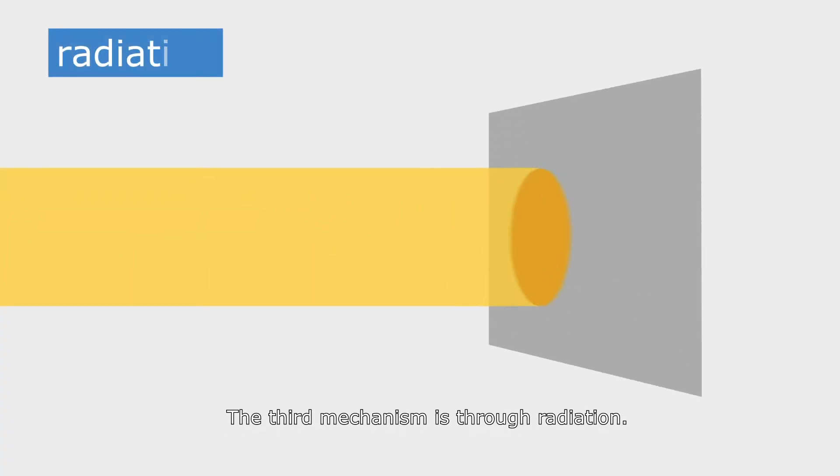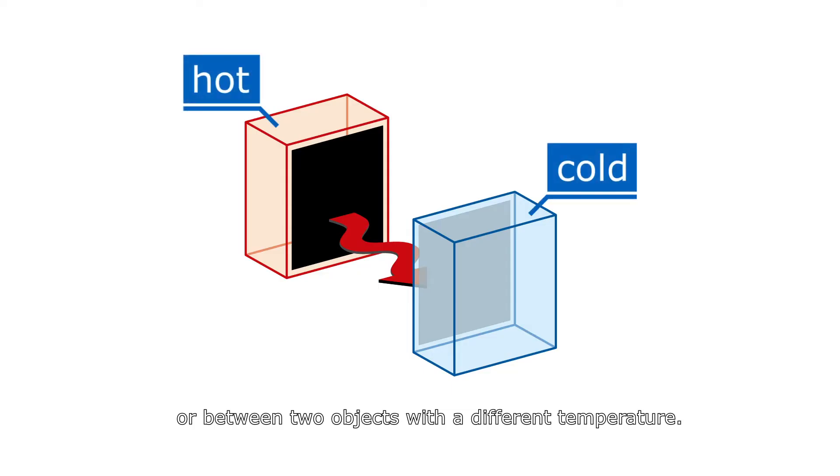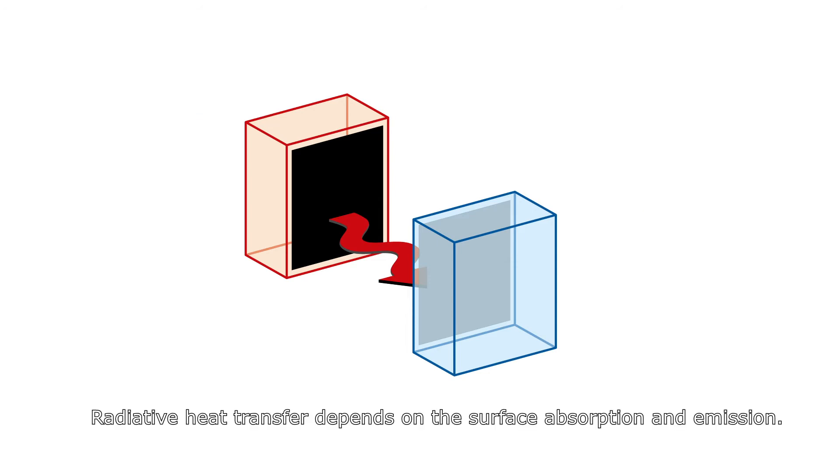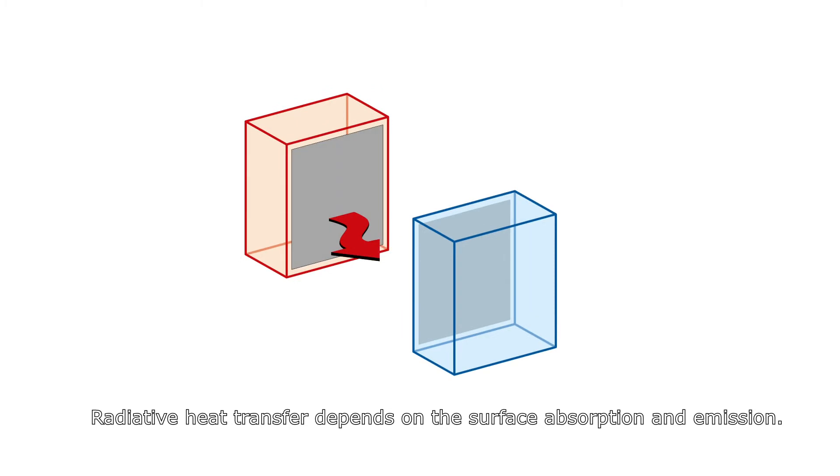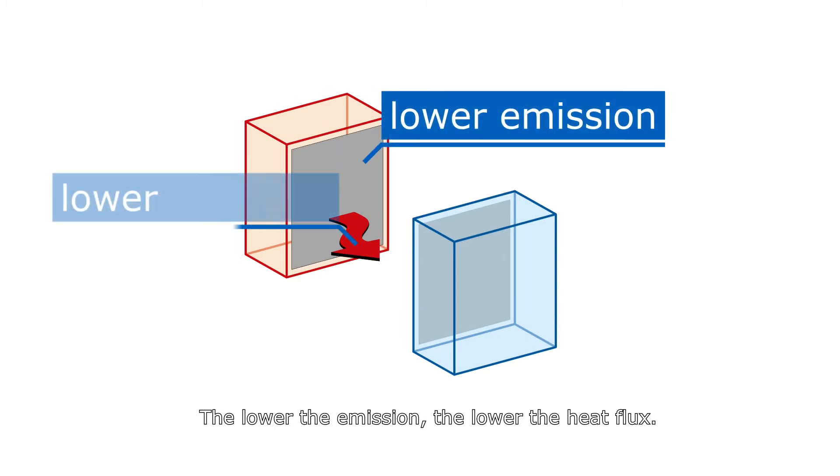The third mechanism is through radiation. For example, from the sun to a wall or between two objects with a different temperature. Radiative heat transfer depends on the surface absorption and emission. The lower the emission, the lower the heat flux.